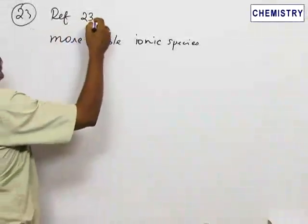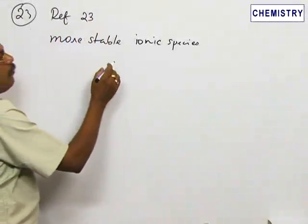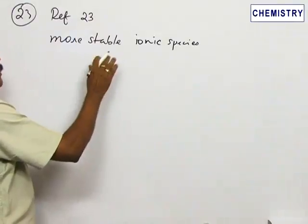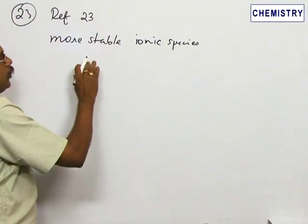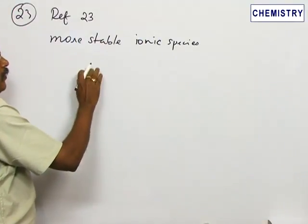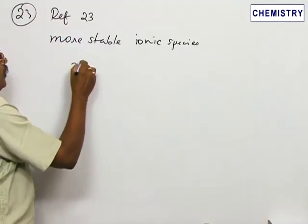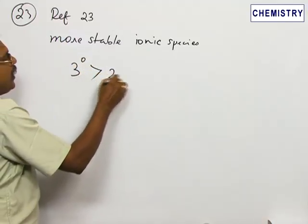Number 23, reference 23 - out of the four compounds, we have to identify the stable ionic species. There are two carbocations and carbanions given. We know that a tertiary carbocation is more stable than a secondary, which is more stable than primary.